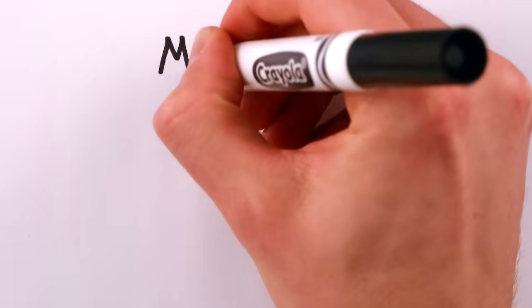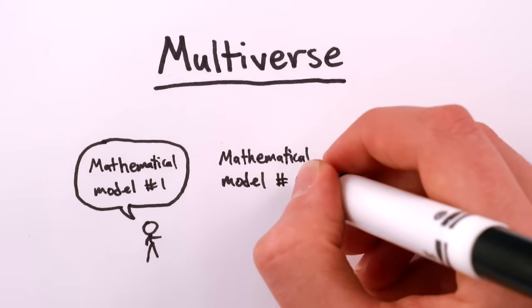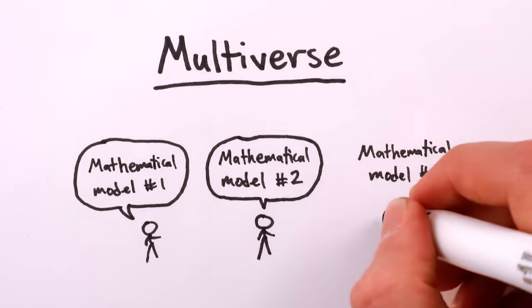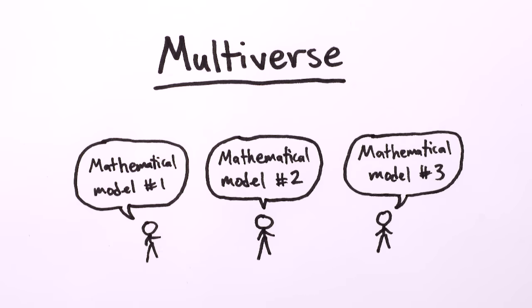So let's cut to the chase. In physics, the word multiverse normally refers to one of three distinct and largely unrelated proposed physical models for the universe. None of which has been tested or confirmed by experiment, by the way.